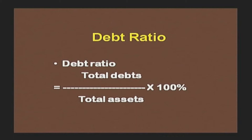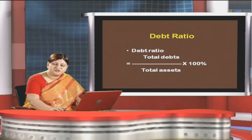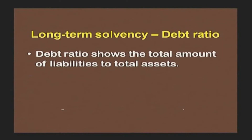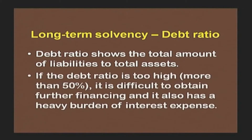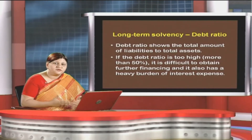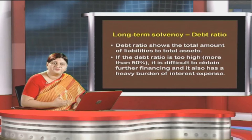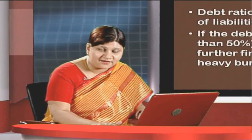The debt ratio shows what percentage of debt a company holds in relation to its assets. Debt ratio shows total liabilities to total assets. If the debt ratio is too high — more than 50 percent — it is difficult to obtain further financing and the company also carries a heavy burden of interest expenses. Where debts are more than 50 percent of assets, interest paid will be on the higher side, resulting in lesser net profits and lesser prospects of obtaining further funding from the market. So it should not be very high.